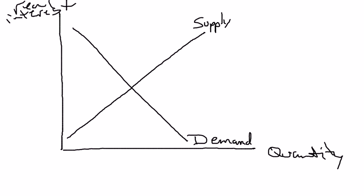Notice the supply curve slopes upwards and the demand curve slopes downwards. They intersect at this point. In economics, when two curves intersect, it probably means something important. And here, it's going to mean the equilibrium interest rate, which I'm going to label as R star and Q star.